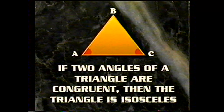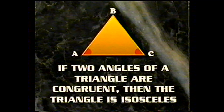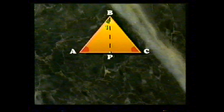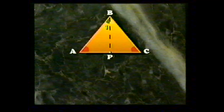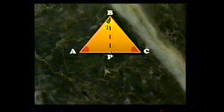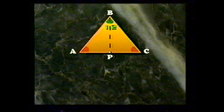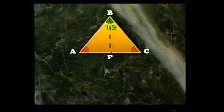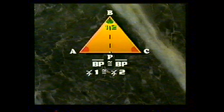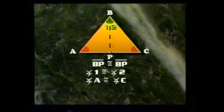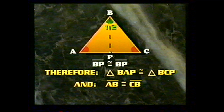The converse of this theorem is also true: if two angles of a triangle are congruent, then the triangle is isosceles. Given triangle ABC with angle A congruent to angle C, draw a line segment from B bisecting angle B, dividing it into two equal parts called angles 1 and 2. Triangle BAP is congruent to triangle BCP by the AAS theorem — both contain side BP, angle 1 is congruent to angle 2 by construction, and angle A is congruent to angle C as given. Since the two triangles are congruent, AB and CB must also be congruent to each other.